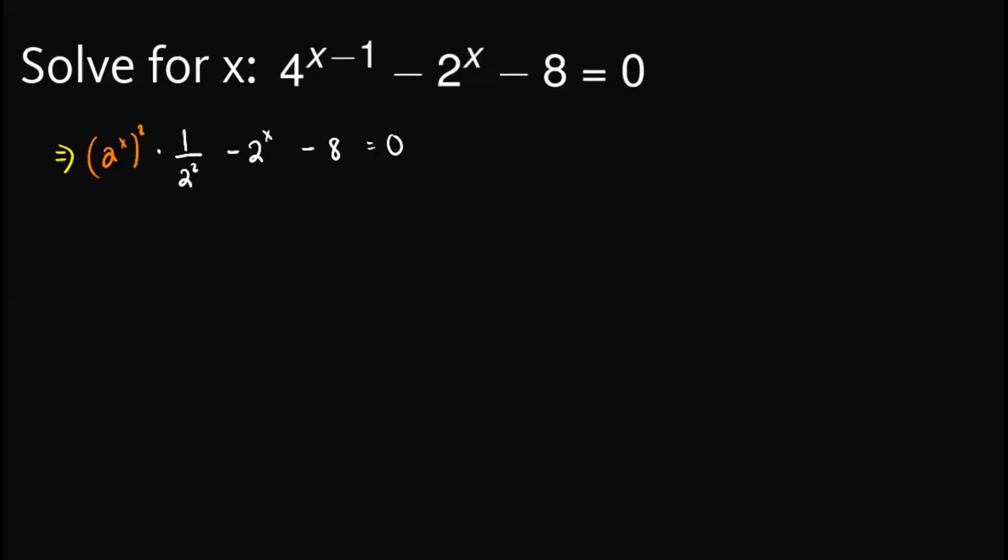So what can we do to easily solve for the value of x? In this one, the key is we can let y equals 2 raised to x. So, we will have y squared times 1 over 2 squared is 1 over 4. So we can simply write 1 over 4 out here minus 2 raised to x is y minus 8 equals 0.